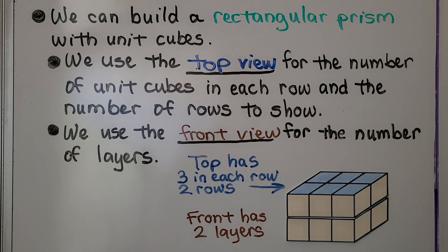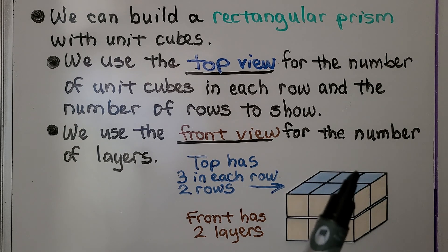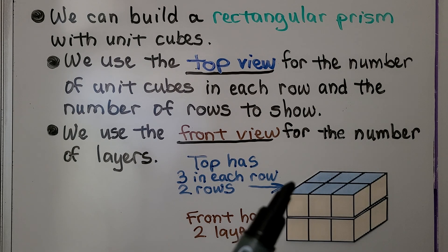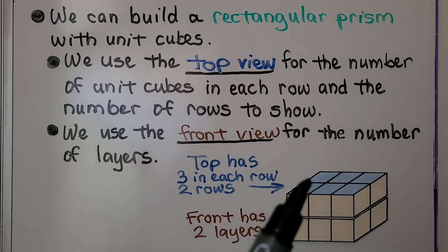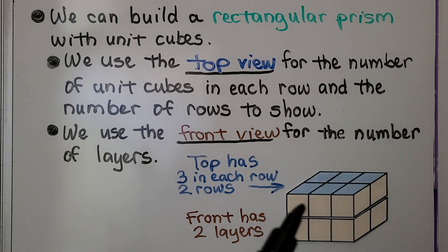We can build a rectangular prism with unit cubes. We use the top view for the number of unit cubes in each row and the number of rows to show. We use the front view for the number of layers. So it has three in each row, and there's two rows, and the front has two layers.